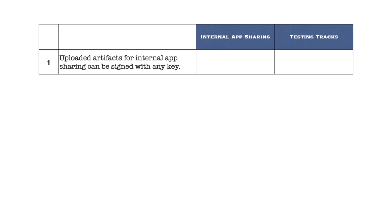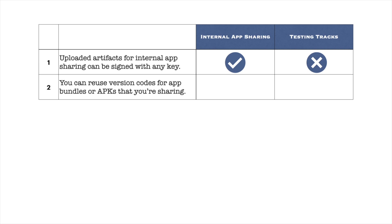Unlike internal, closed and open test tracks, the uploaded build files for internal app sharing can be signed with any key and don't need to be signed with a production or upload key. Version codes don't need to be new or unique for app bundles or APKs that you upload in internal app sharing — you can reuse version codes.